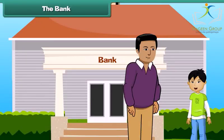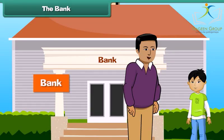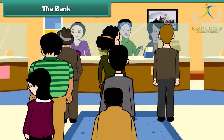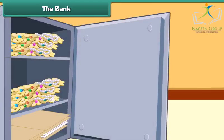Dad, what is this? This is a bank. We all keep our money safe inside a bank, and we can take out our money at any time of need. Besides money, we can also keep our important papers and jewelry in the bank.